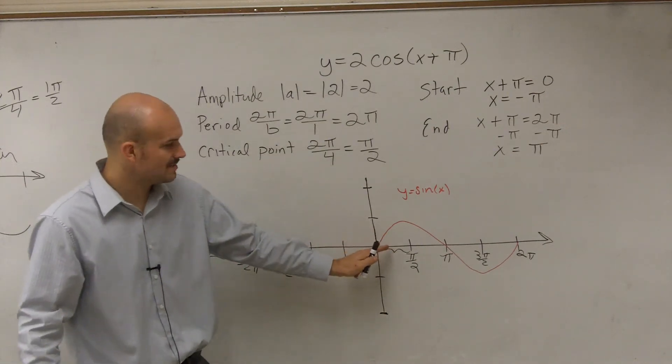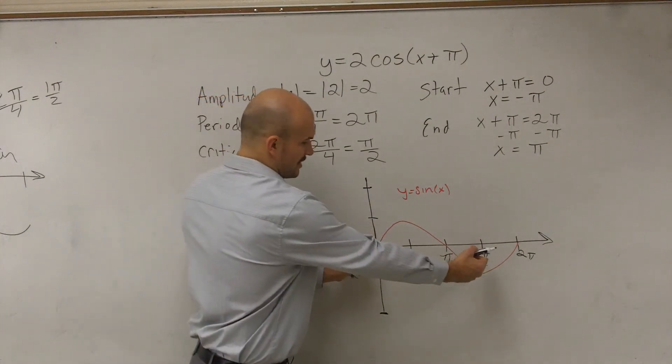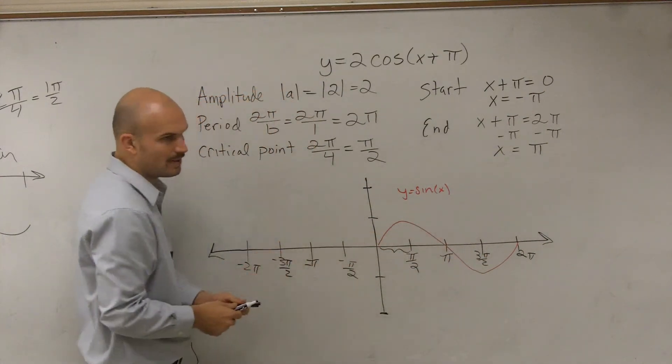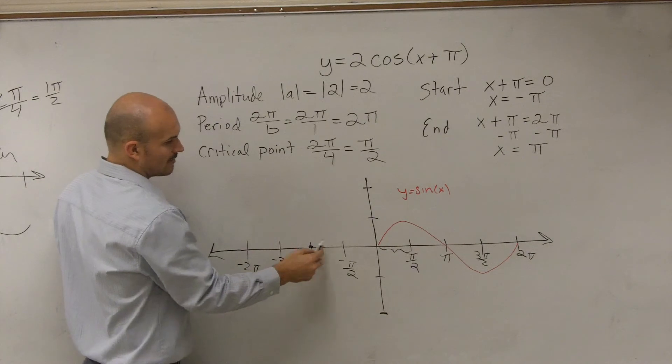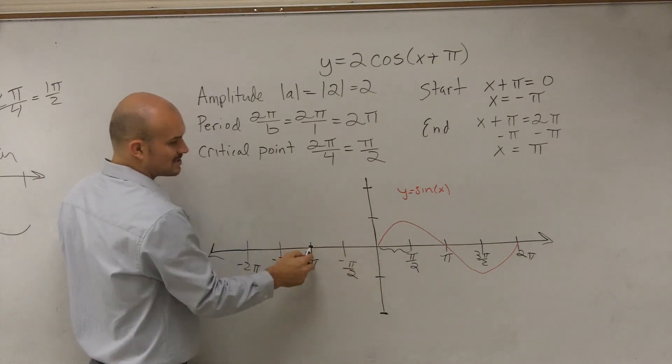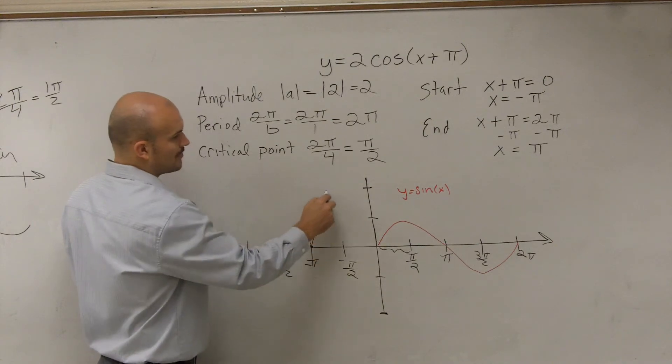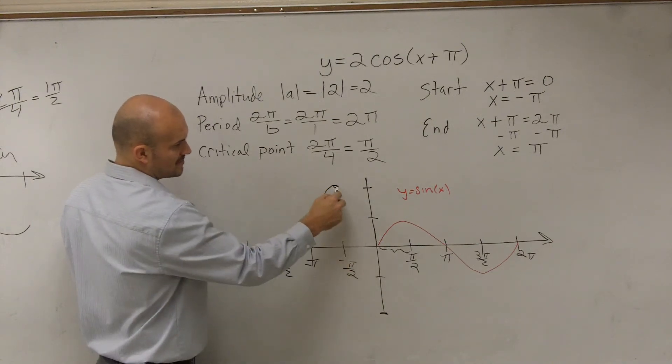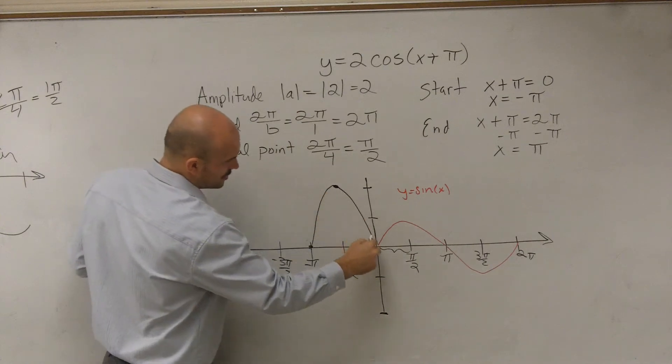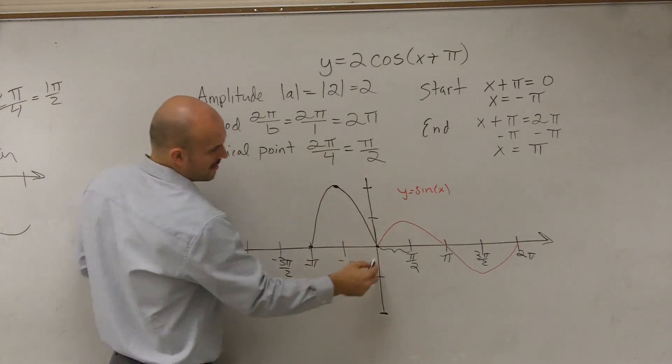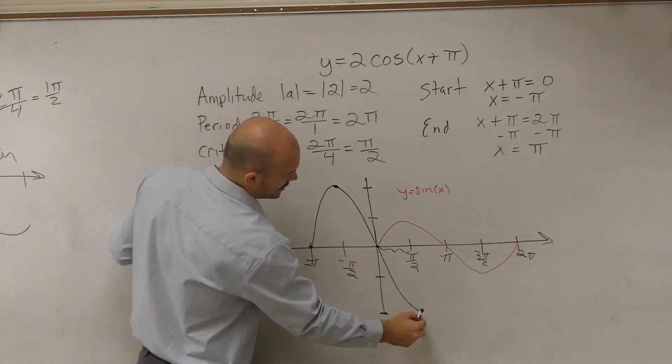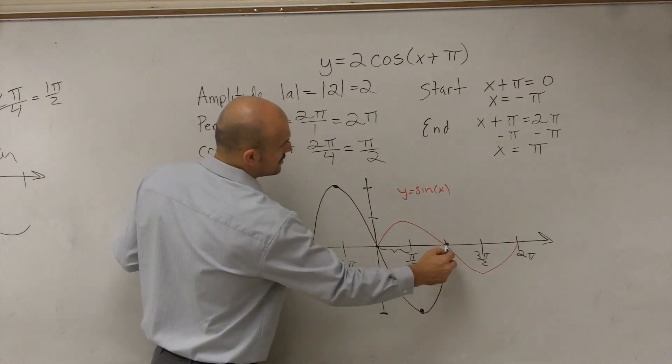So what we're going to do is we're simply going to take this graph and shift it over by π. So now, rather than starting at (0,0), I'm going to start my graph at negative π. It's going to go up to the first critical point, which is π/2 distance, up to 2. Then it's going to cross its next critical point. Then go down to negative 2. And then finish at π.